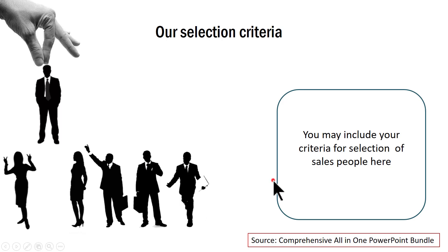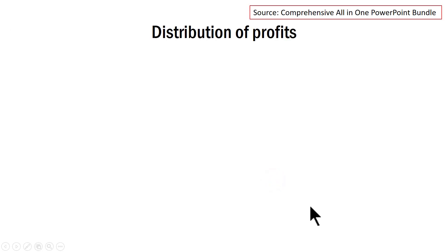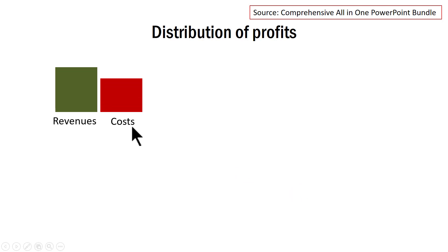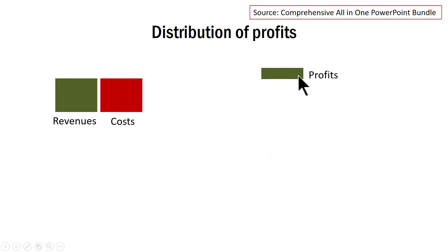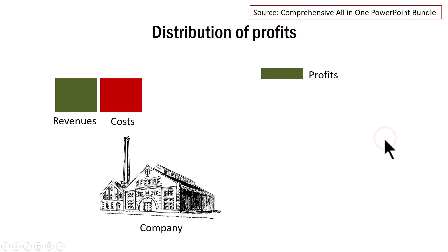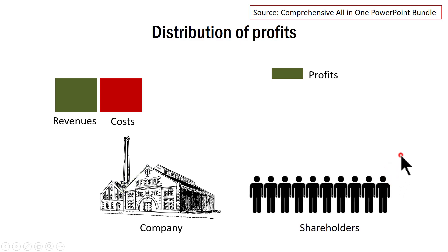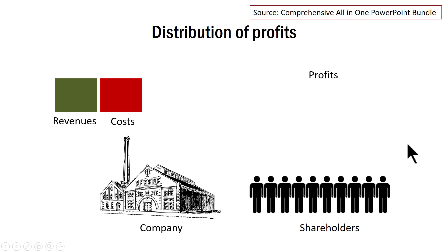If I want to communicate a finance concept like distribution of profits, I can do something like this. First I talk about revenues and costs — created using just simple rectangular shapes. Then on a click I show that the excess, which is revenue minus cost, is profits, and this is then distributed between a company and the various shareholders using a simple but beautiful animation effect. These are shapes that I have hand drawn, this is a picture, and these again are hand drawn — combined with custom animation to create a very interesting finance concept.